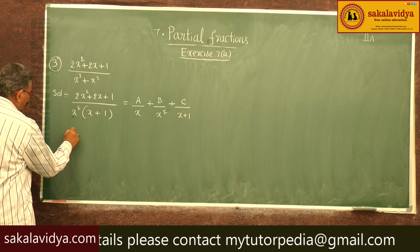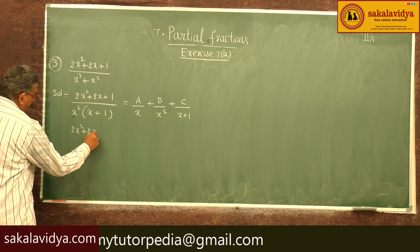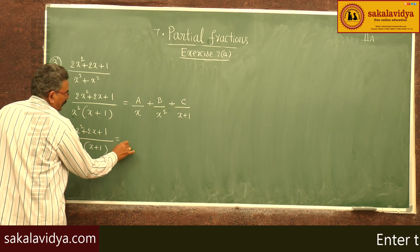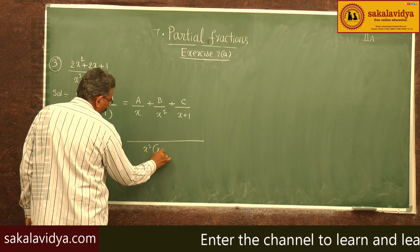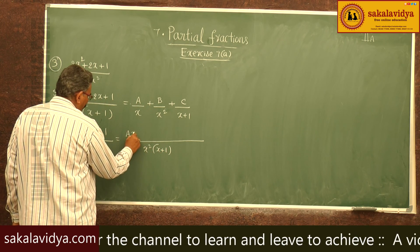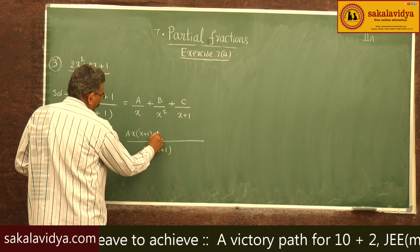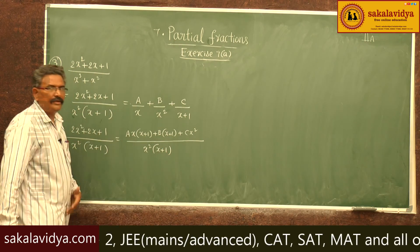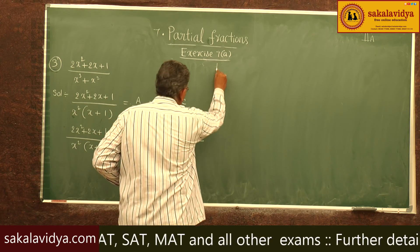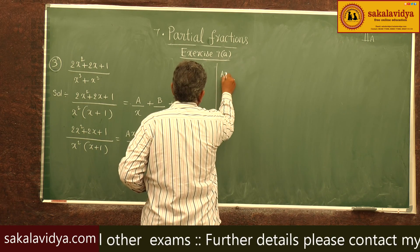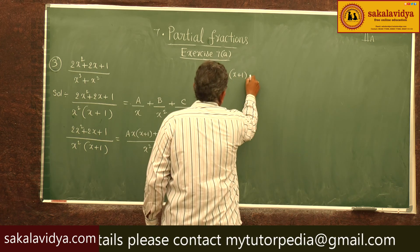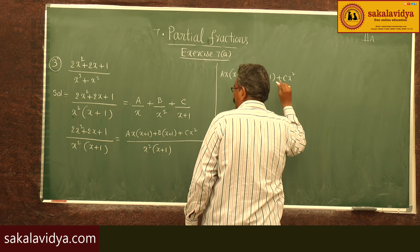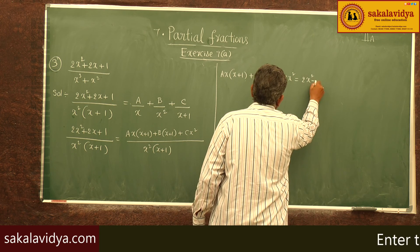Now, (2x² + 2x + 1) / [x²(x+1)] equals A·x(x+1) + B(x+1) + C·x², with LCM equal to x²(x+1), and the right-hand side equals 2x² + 2x + 1.